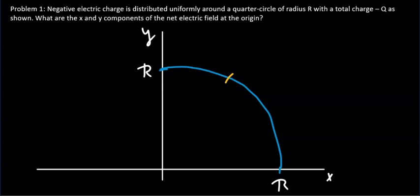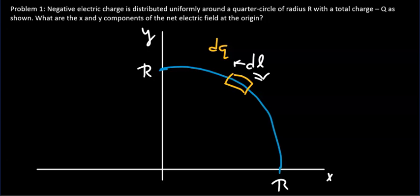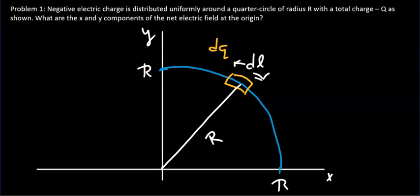One such small segment has length dL and contains an amount of charge dq. It is situated at a distance r from the origin. The electric field it would create at the origin points toward the charge because we are dealing with a negative charge.